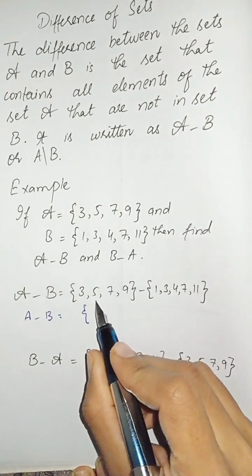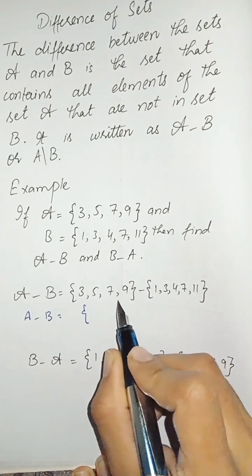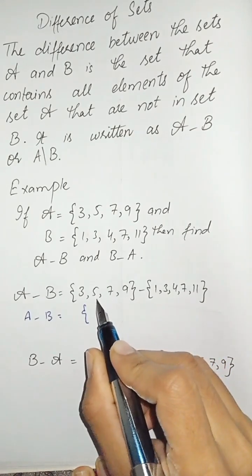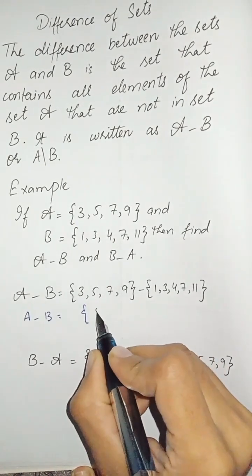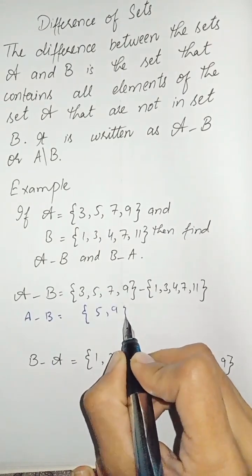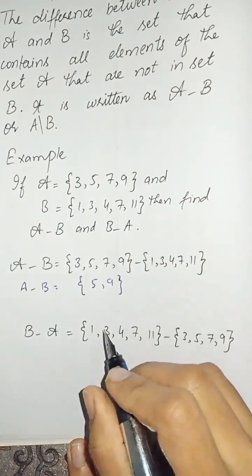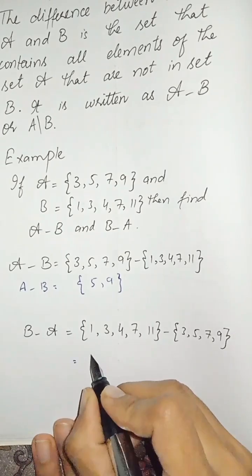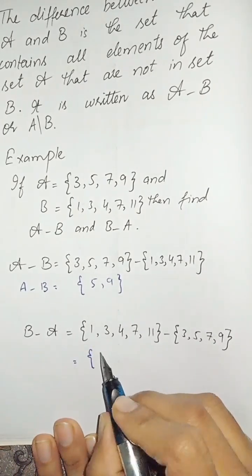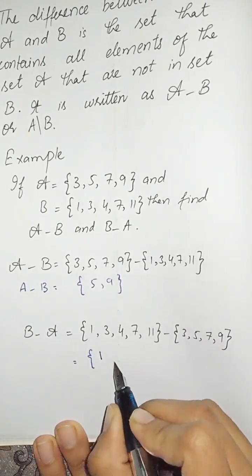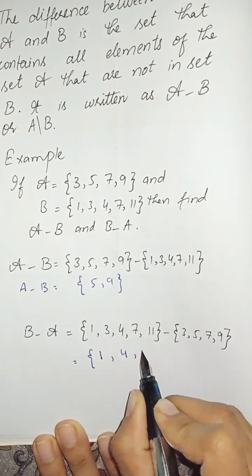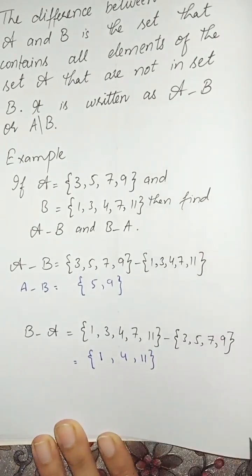These elements are 5 and 9, which are present in A but not in B. For B minus A, you can write this is 1, 4, and 11.